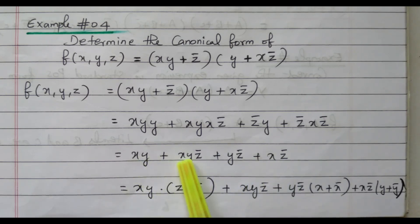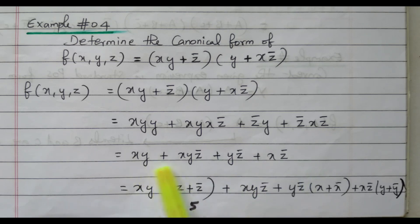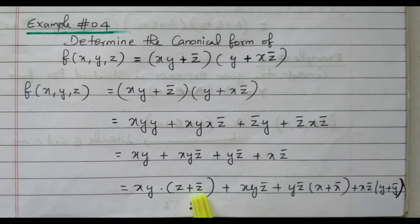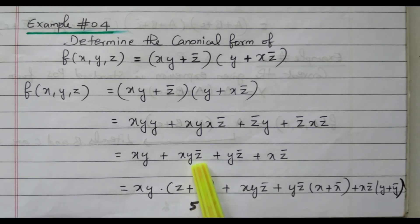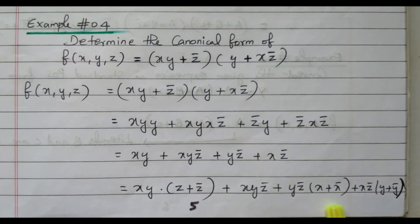Now we need to identify which terms are missing literals. In XY, Z is missing — so it is multiplied with (Z + Z̄). In XYZ̄, all terms X, Y, Z are available. In YZ̄, X is missing — so it is multiplied with (X + X̄). In XZ̄, Y is missing — so it is multiplied with (Y + Ȳ). Now we can proceed with the expansion.